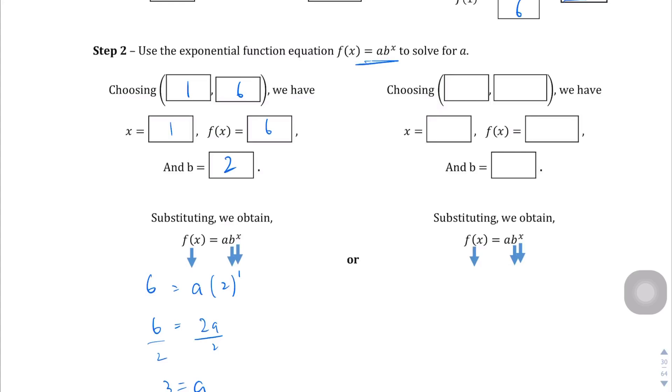And if we do the other one, we should also get 3 for a. So if we use the other point, 2, 12. The x value is 2. I don't know what I'm writing there. 2. The f of x, or the function of x, is right there, like 12.